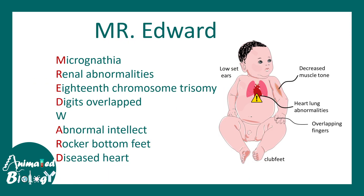In order to understand all the phenotypes associated with Edward syndrome, you can use the mnemonic known as MR. EDWARD, where M stands for micrognathia — low or narrow jaws — then R for renal abnormalities, and E for 18th chromosome trisomy, D for digits which are overlapped.